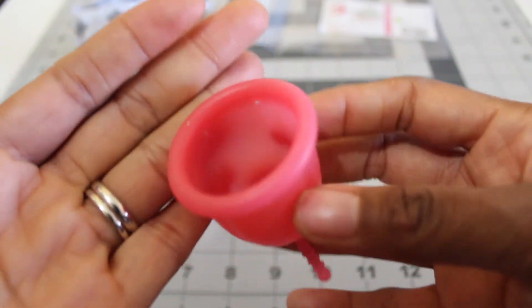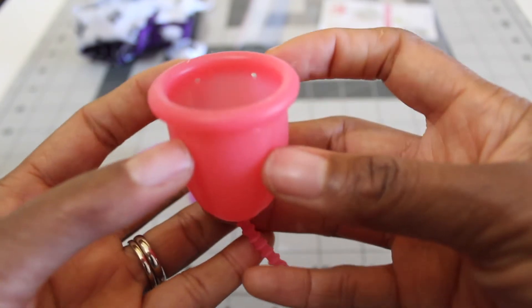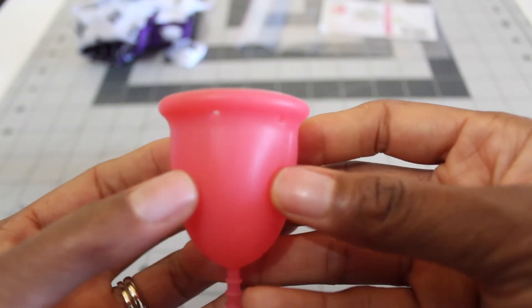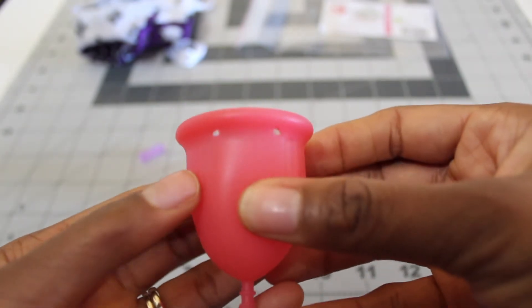There are four suction release holes but they're not equally spaced. There's two on one side here and then two across from it on the back. As you can see pretty big holes. You can see right through them so it should be fairly easy to clean even without running water.